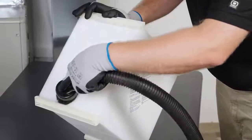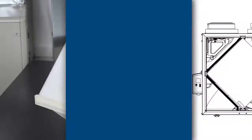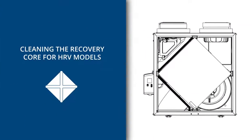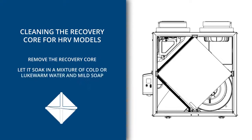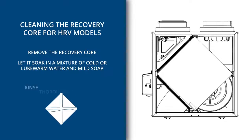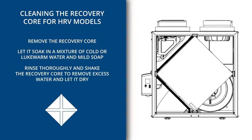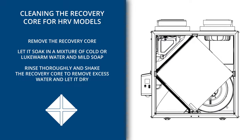Then clean the recovery core and blower assemblies. To clean the recovery core for HRV models, remove the recovery core. Remove dust using a vacuum cleaner with a soft brush attachment. Rinse thoroughly and shake the recovery core to remove excess water and let it dry.